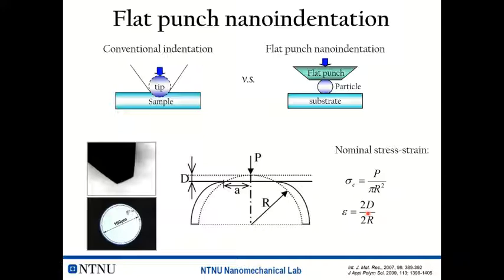Think about this: we have particles in spherical shape, composite structure, and around micrometer size scale. It's difficult to measure that by conventional mechanical testing methods. The normal indentation has a sharp tip penetrating into an initially flat surface. Our case is actually an inverse indentation. So we thought if we could design a flat punch to compress a spherical particle, then by using the high resolution of nano-indentation, we can obtain the mechanical behavior of the particles, and by applying a simple model, we can extract the nominal stress-strain of the particles.